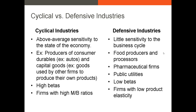On the other hand, defensive industries tend to be very insensitive to the business cycle — you'll see less volatility with these companies. They tend to be companies like food producers, food processors, grocery stores, pharmaceutical firms, and public utilities. All of these companies will have very low betas. Another key takeaway is that these firms have very low product elasticity — the goods and services they sell have very inelastic demand. People are always going to want medicine, electricity, food, and household goods.